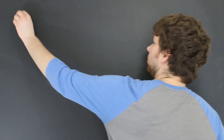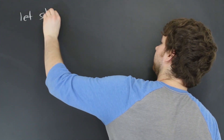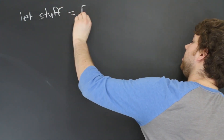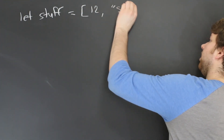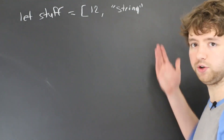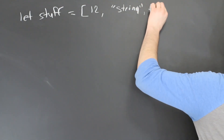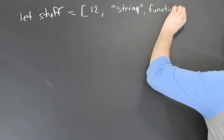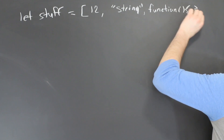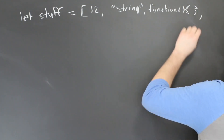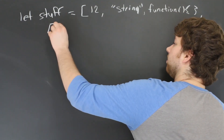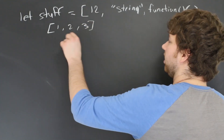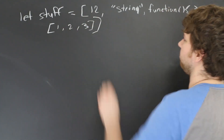Arrays can contain anything, meaning we can create an array — we'll just call it 'stuff.' In here, we can put a number, we could put a string, a custom object, or even a function. So we could say 'function' and basically make a function on the fly — that's a function that does nothing. And another thing you can put in here is an array itself. So you could put an array like so, adding an array with three elements, all inside of this bigger array called 'stuff.'